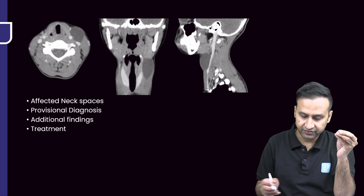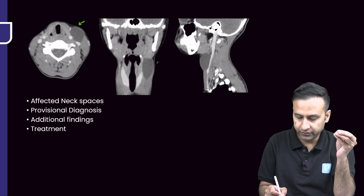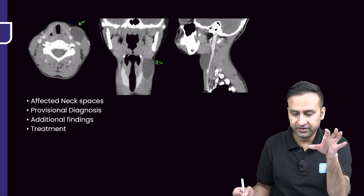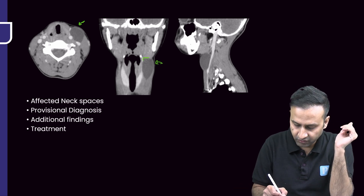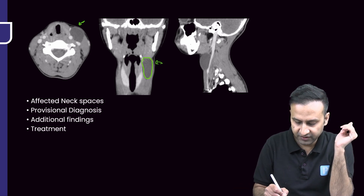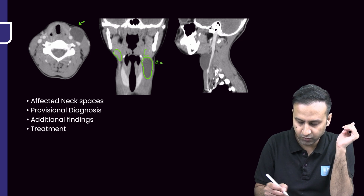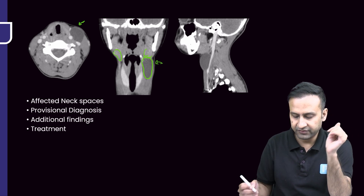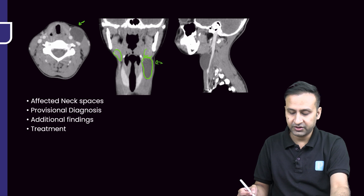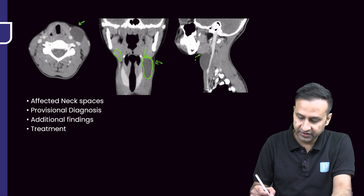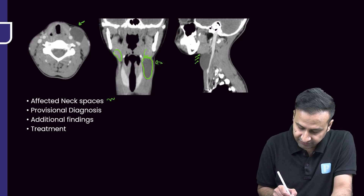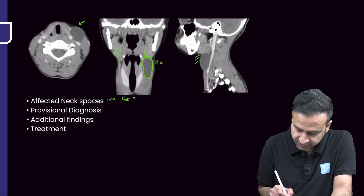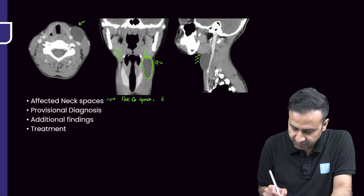Looking at this particular image — the lesion is present on the left side of the neck, very clear. You can also see that it is extending up to the submandibular space. This is the submandibular gland on this side; you can see the submandibular gland quite well here. The inferior part of the submandibular gland appears to have been pushed by this lesion, which is very well seen even on this sagittal reformatted image. So the neck spaces affected are the anterior cervical space along with extension into the submandibular space.